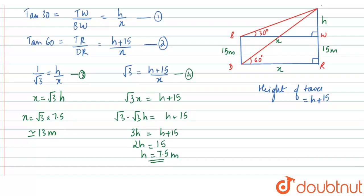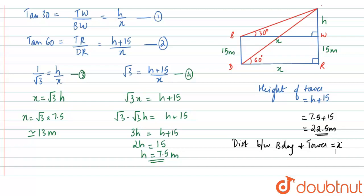The height of the tower is h + 15 = 7.5 + 15 = 22.5 meters. The distance between the building and tower is x = 13 meters. These are the two answers: height of the tower is 22.5 meters and distance between building and tower is 13 meters.